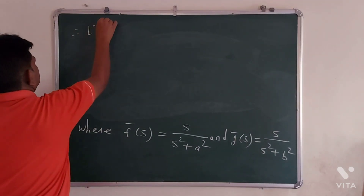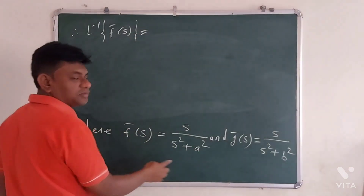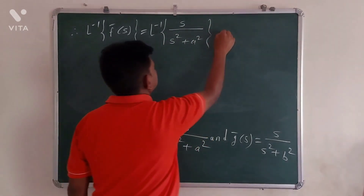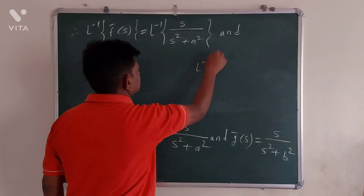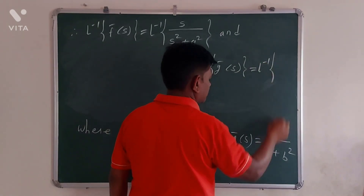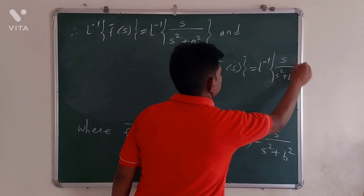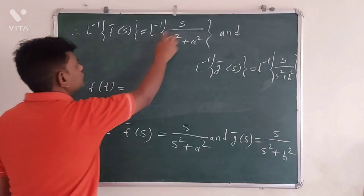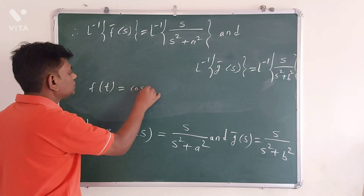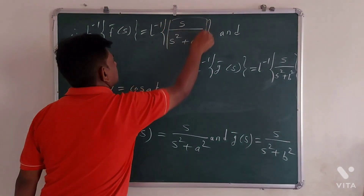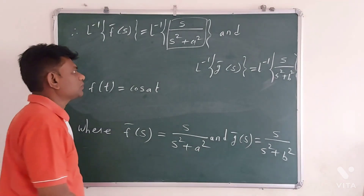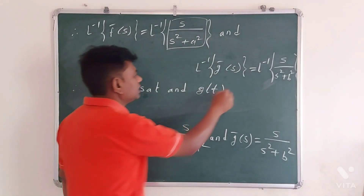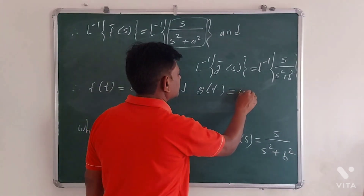Now applying the inverse Laplace transform: L inverse of f̄(s) equals L inverse of s over (s squared plus a squared), which gives f(t) equals cos(at), because the Laplace transform of cos(at) is s over (s squared plus a squared). Similarly, L inverse of ḡ(s) gives g(t) equals cos(bt).